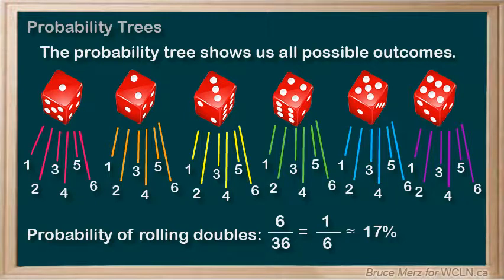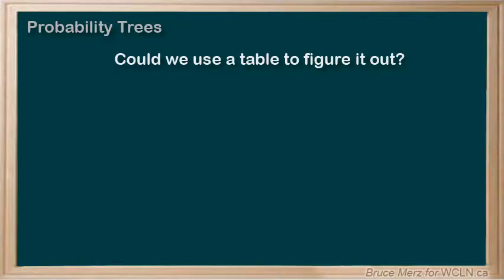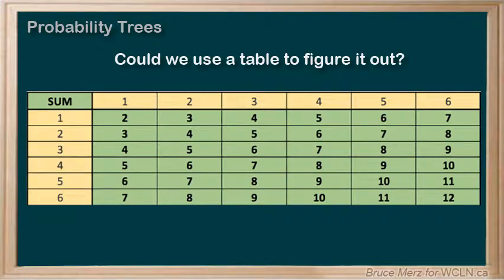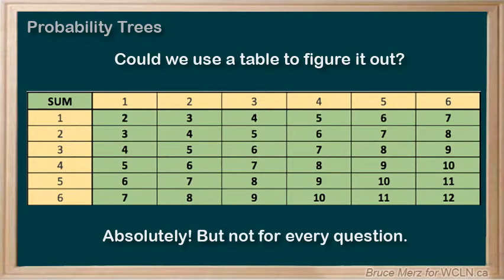Anyway, if you got that, way to go. As you can hopefully see, probability trees are very visual and often very nice to work with. Now some of you might be wondering, wait, couldn't we have used something like the table we made before to figure this out? And we can see the doubles are right here on the diagonal. Absolutely, that would have been very quick if we had that table handy. However, even still, not all questions are this straightforward to answer, and you'll see what I mean in the next video.